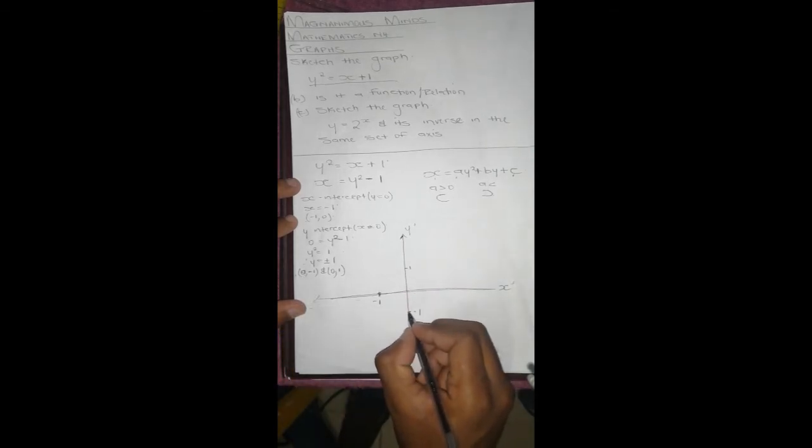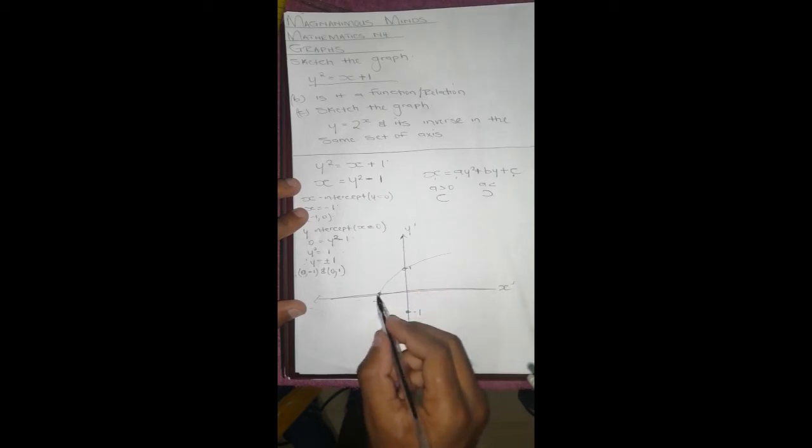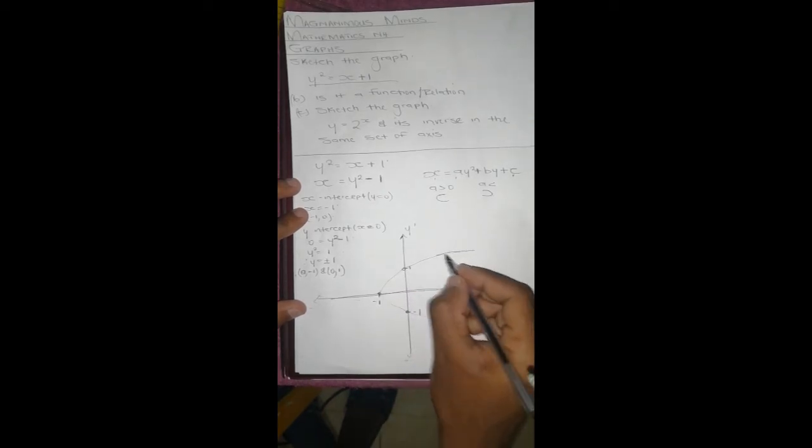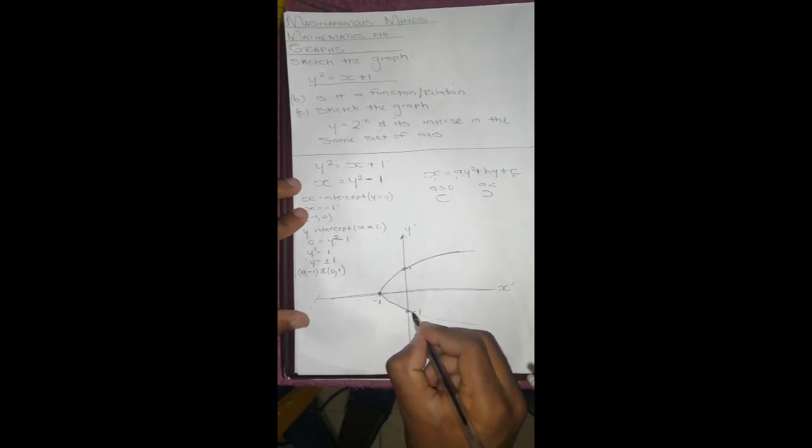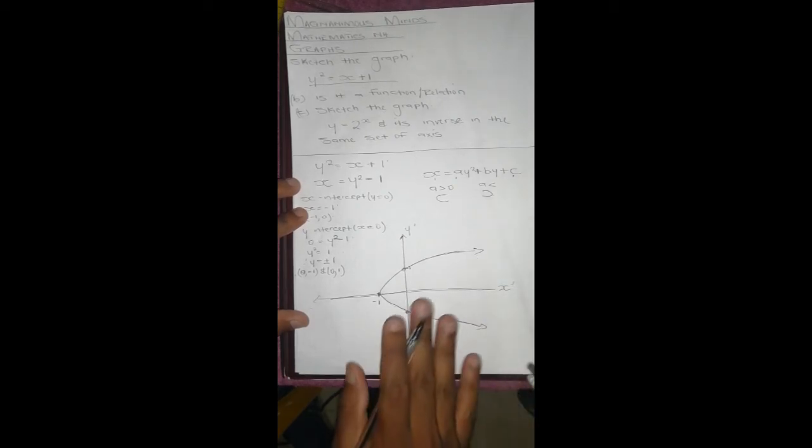We'll first mark the intercepts: x-intercept is negative 1 and 0, y-intercepts are 0 and negative 1, and 0 and 1. So our graph is going to be something like this.